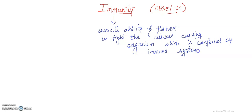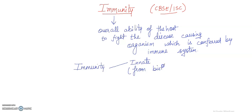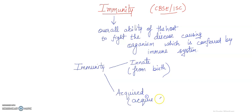Immunity can be classified into two parts. The first is innate immunity and the second is acquired immunity. Innate means from birth, whereas acquired immunity is what we acquire during our lifetime.